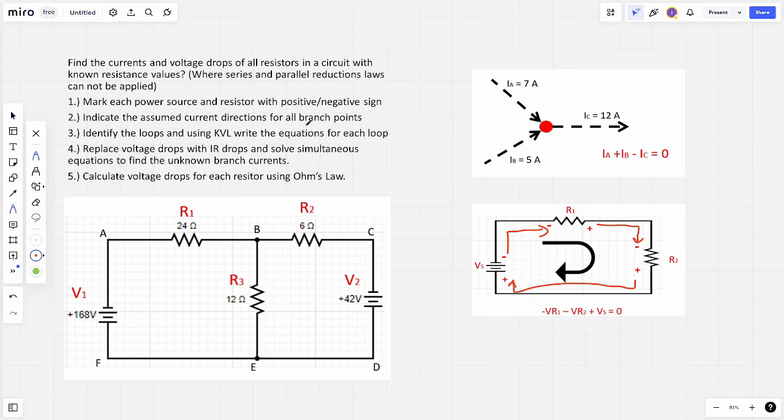So here are the five steps you must follow. Firstly, we're going to mark each power source and resistor with a positive and negative sign. Just like I did in this bottom right hand corner diagram, we're going to be doing exactly the same and we're going to have to do it for each power source. Remember for each power source. Secondly, we're going to indicate the assumed current directions. Now in this case, as I've talked about, current flows from negative to positive, so we're going to have to do the same thing for both loops.